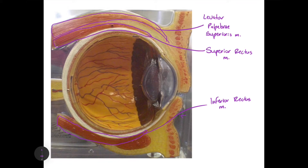We also have two extra muscles: the medial rectus muscle and the lateral rectus muscle, which aren't shown in this model. As you can assume, the medial rectus muscle is on the medial side of the eyeball and the lateral rectus muscle is found on the lateral side of the eyeball.